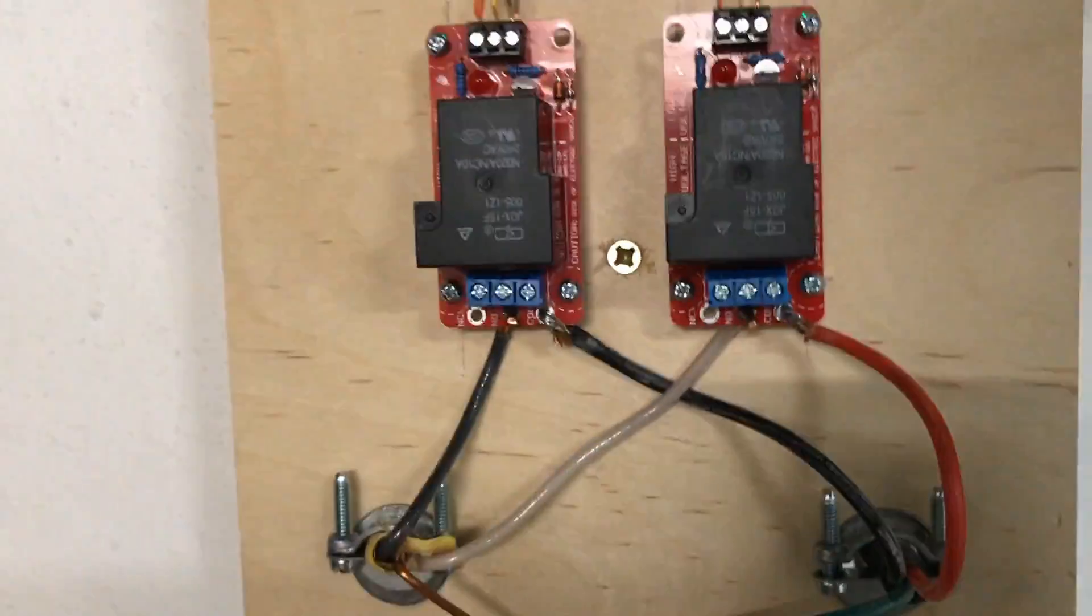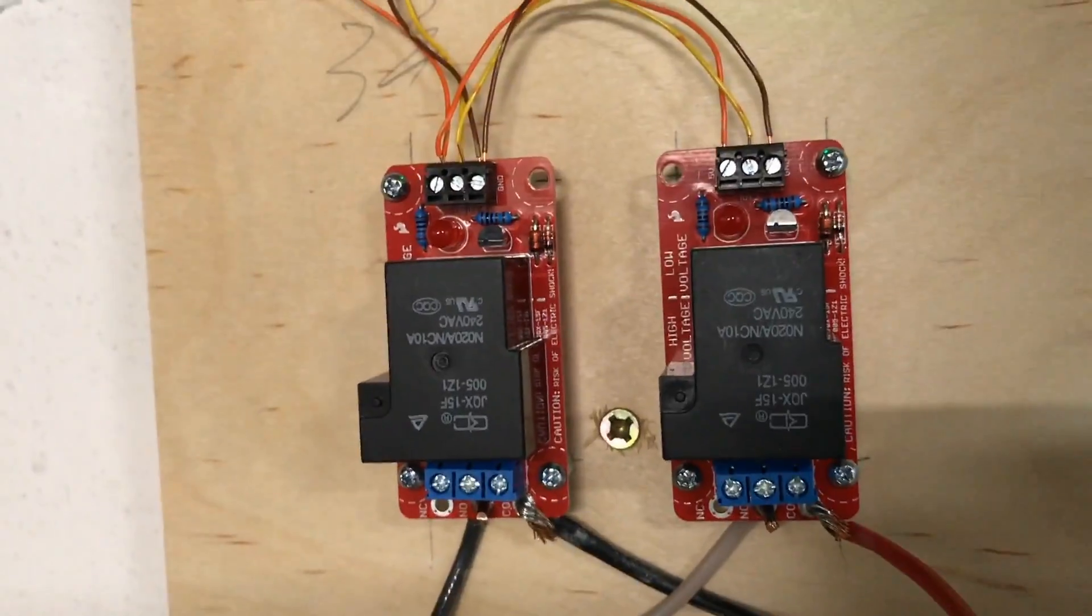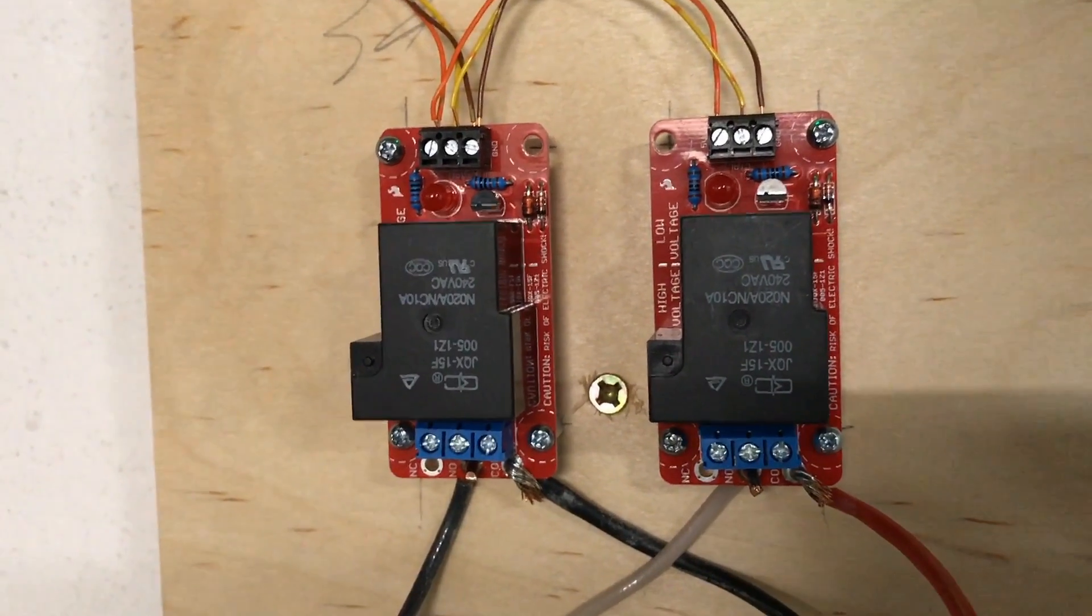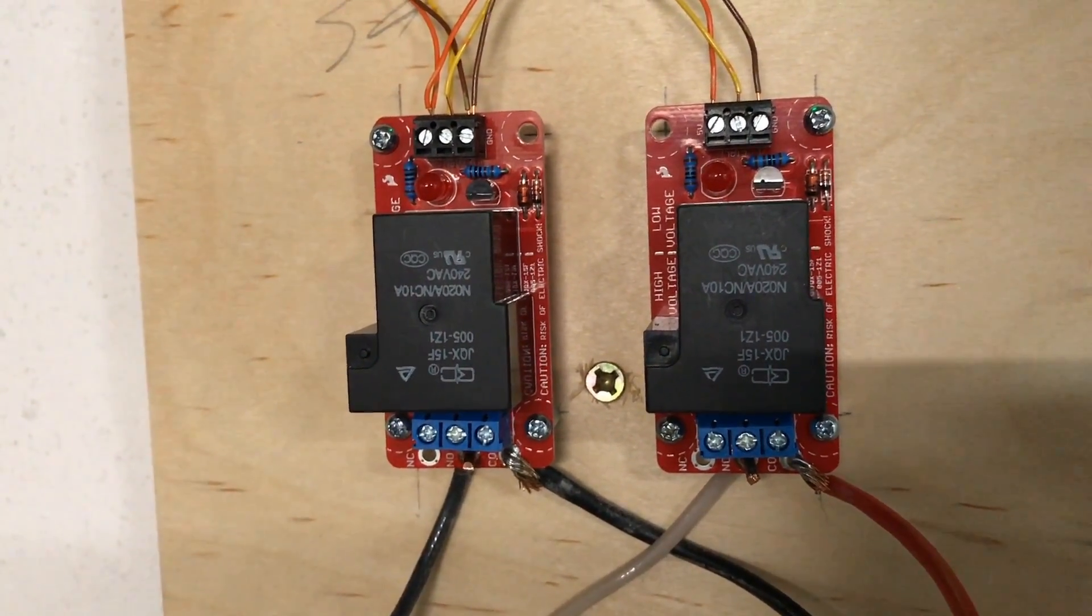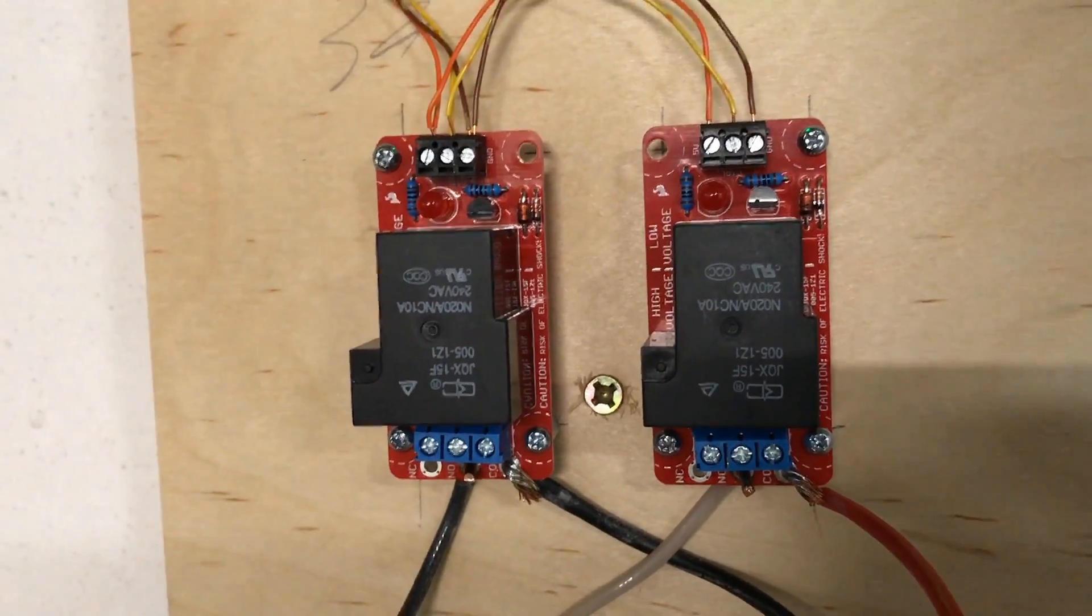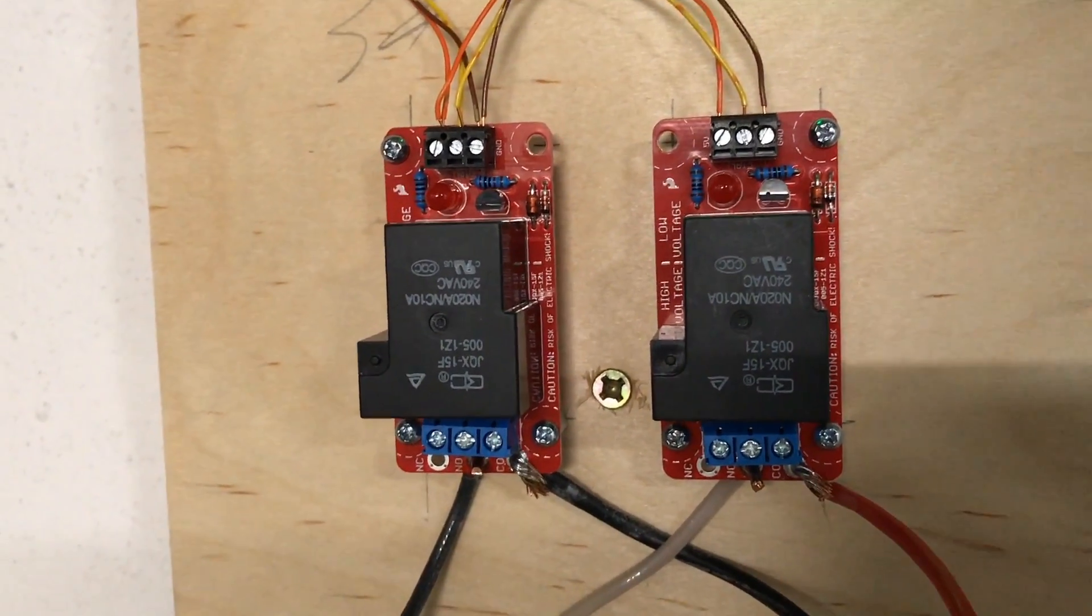And then these are just two relay boards from SparkFun. So the signal wire goes to the top. I have two here because this is a 240-volt dust collector, so I need to switch both hots. You would only need one relay board if you had a 120-volt tool.